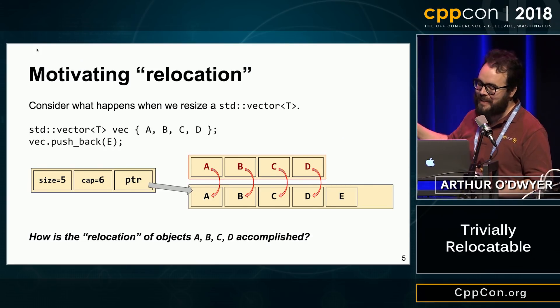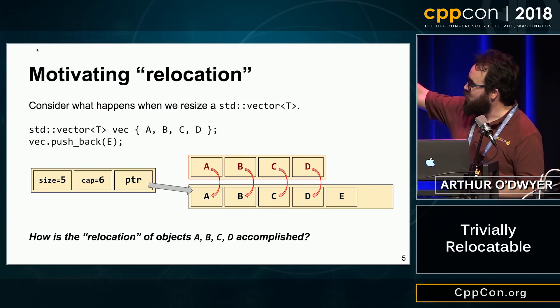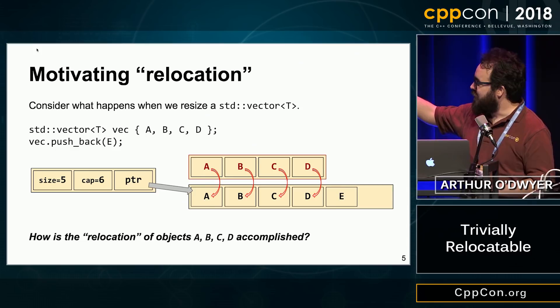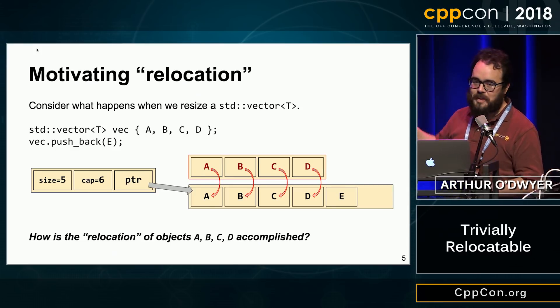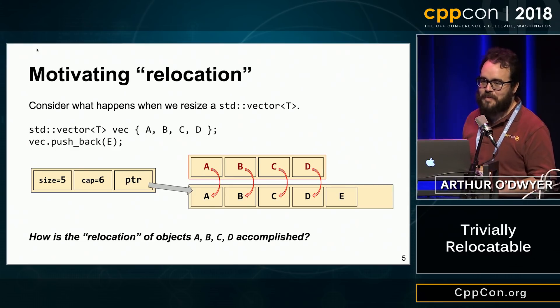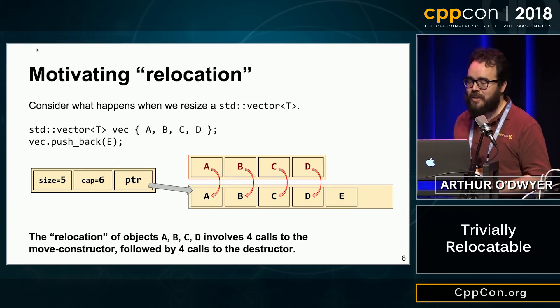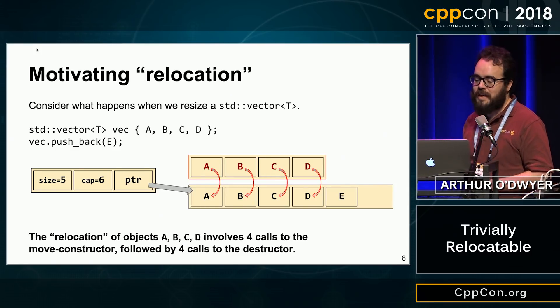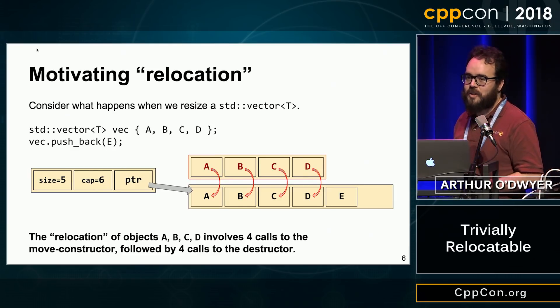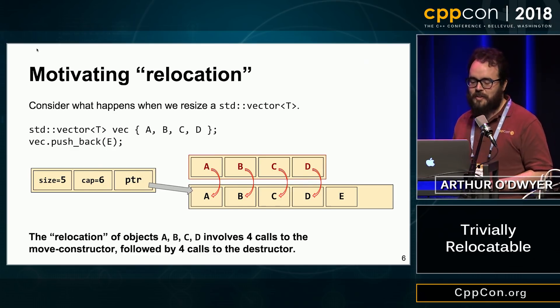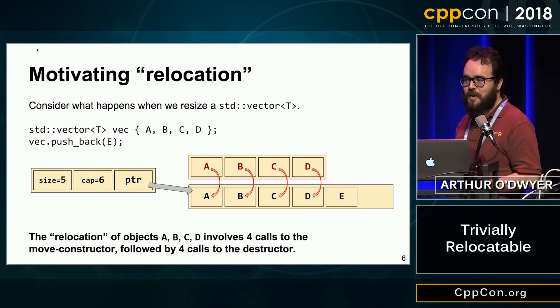I'll tell you about that word in a little bit. From where they are to this new place, we also have to get rid of the originals. So basically when I say relocate, what I mean is we're going to call the move constructor and then call the destructor — and we're going to do that four times in a row.